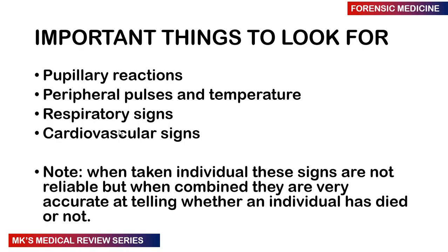There are certain important signs we look for, but if we take these signs as individual signs, it is very unreliable. For example, a person may have absent pupillary reactions in certain conditions, and can still have some respiratory or cardiovascular activity — their brainstem may be dead, but they are still technically legally alive. Which is why you must take all these signs as a combination and not as individual signs.